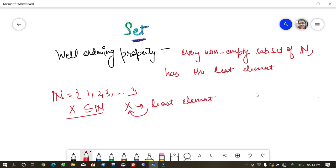If I choose 2, 3, 4 and so on, this two will be the least element and that is inside X. So that is the well-ordering property.